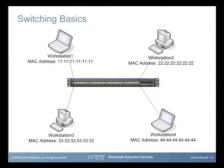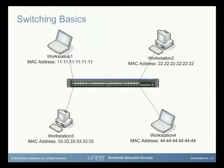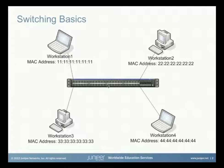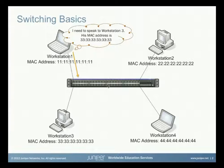So let's begin by looking at how computers would communicate on a network. Here we have a very simple network comprising of a single switch and four workstations. Now let's say that Workstation 1 wishes to communicate with Workstation 3. It will send a frame to the switch, and in the frame, it will have a destination address, which is the MAC address of Workstation 3.